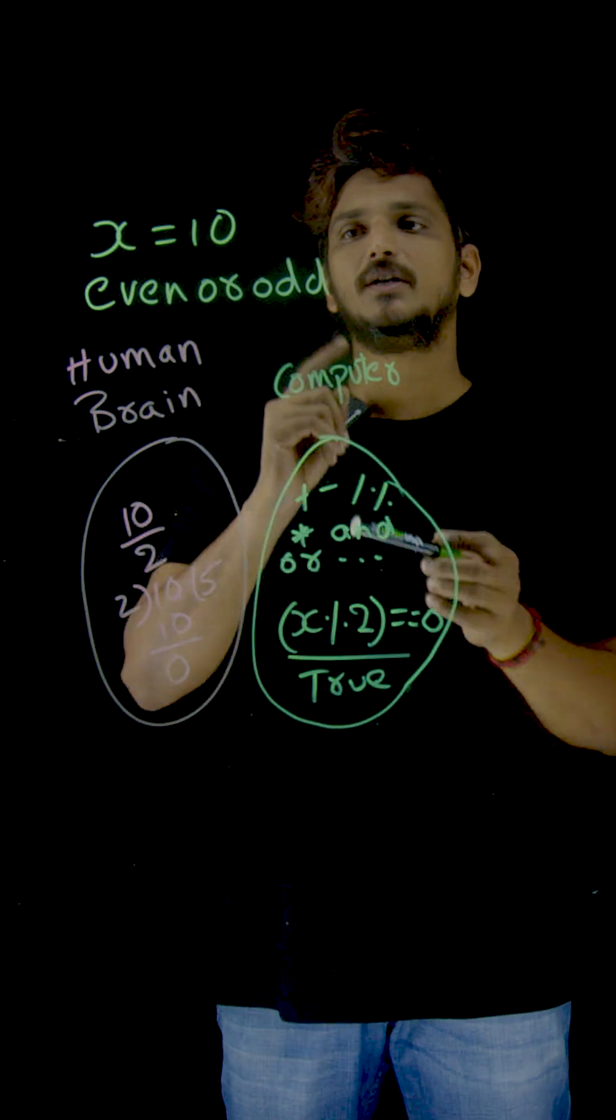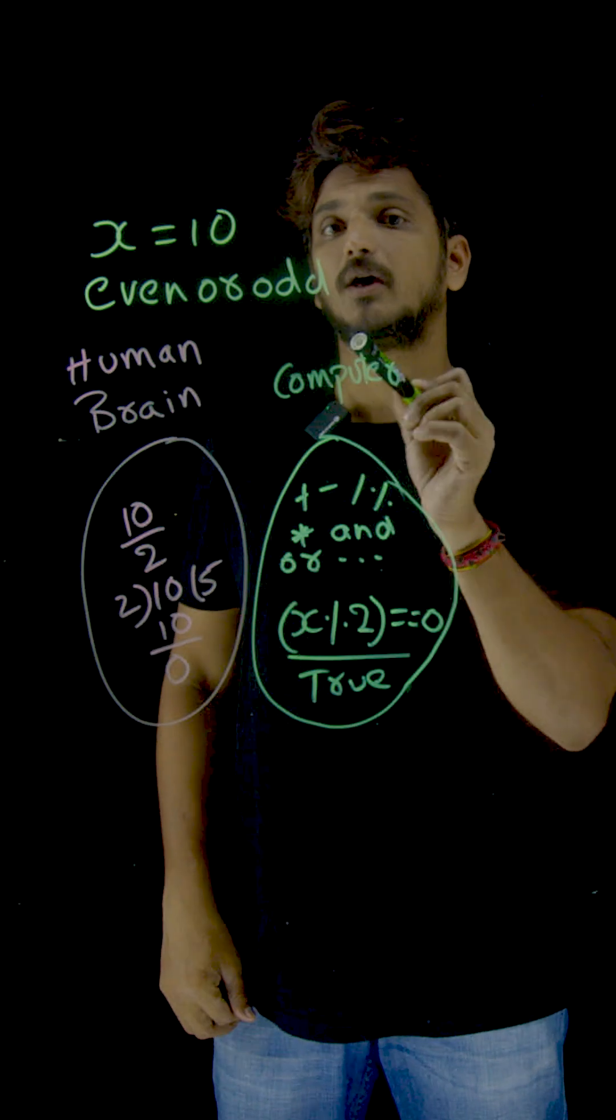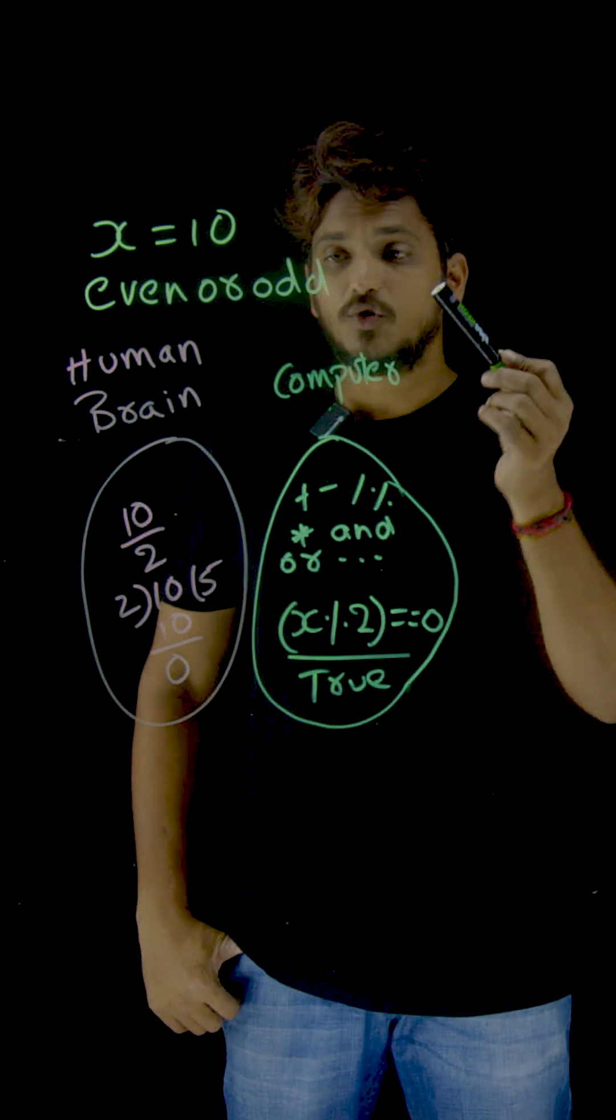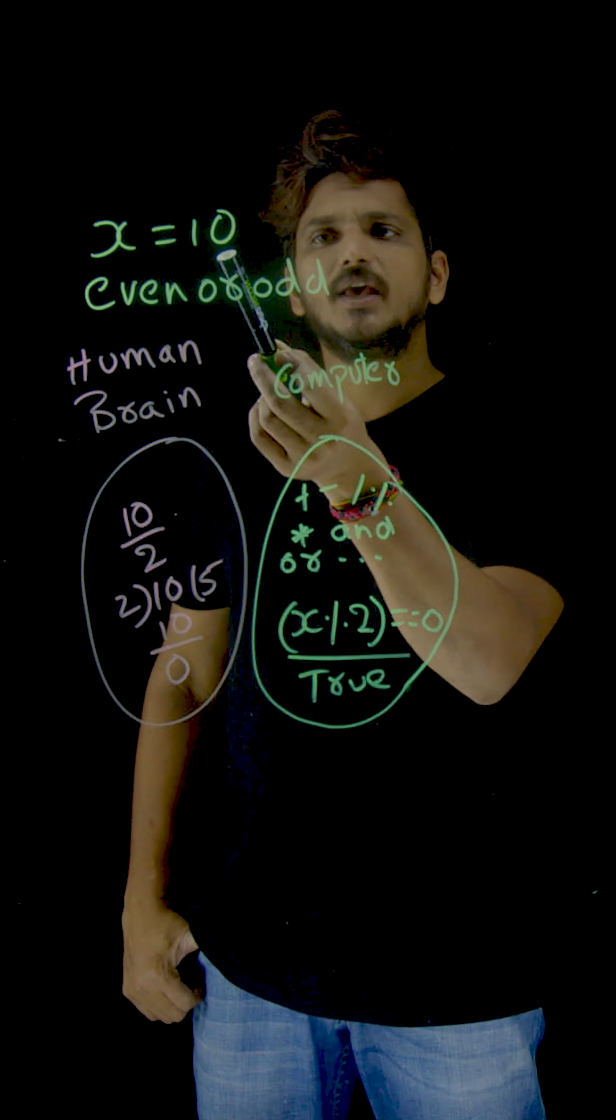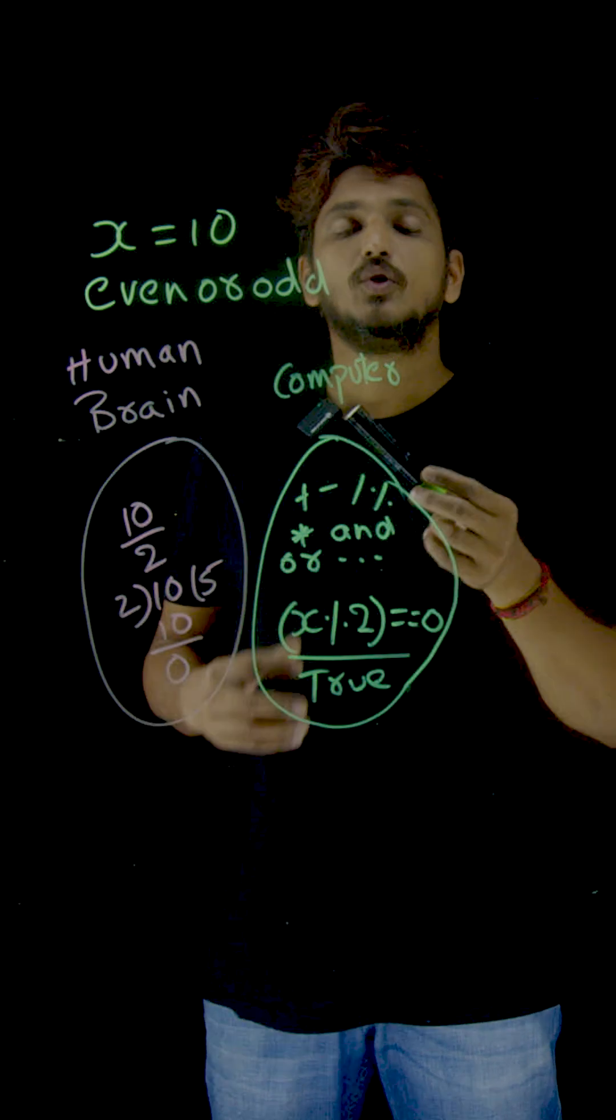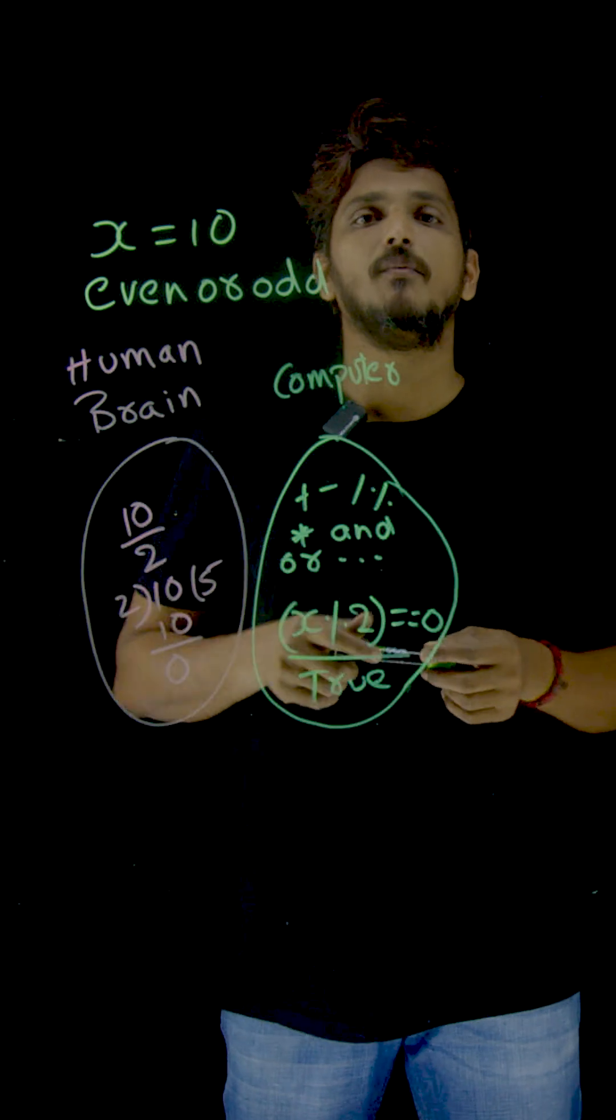They asked you to tell whether this number is an even number or odd number. What are you going to do? Immediately, you can say by looking at this number 10 that it's an even number.